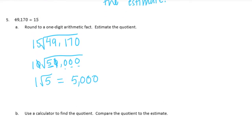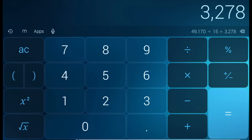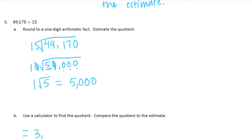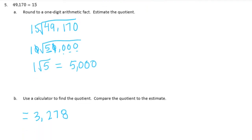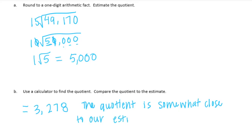Now let's use a calculator. 49,170 divided by 15 equals 3,278. I would say our estimate is somewhat close to the quotient, but not as accurate as the previous problems.